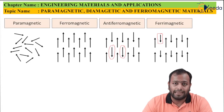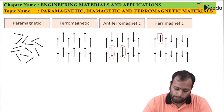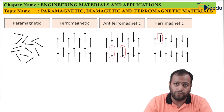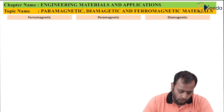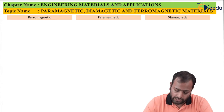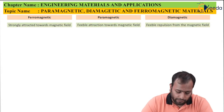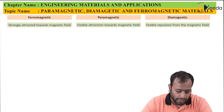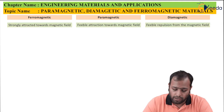Now let's take the most important and crux of this chapter: distinguishing between paramagnetic, ferromagnetic, and diamagnetic substances. This is the most important question for university exams, asked for around 5 to 6 months, so write at least 8 to 10 points. First point: ferromagnetic substances are strongly attracted towards a magnetic field; paramagnetic show feeble attraction; and diamagnetic substances show feeble repulsion from the magnetic field.